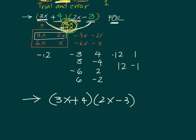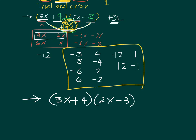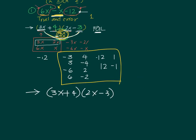We check: 3x and 2x is 6x squared. The inner and outer will become negative x. Positive 4 times negative 3 is negative 12. So we were able to find the correct factors of the given expression: 3x plus 4, and 2x minus 3. This is trial and error — expect that you will get a combination that will not work. That is why it's called a trial and error. But if you do it systematically and place values systematically, then if you're lucky you can get the correct combination of factors immediately.